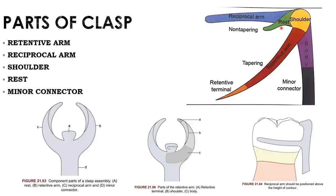Minor connectors connect different components to the major connector. So the components of the clasp assembly are: reciprocal arm, shoulder, retentive arm, retentive terminal, rest, body, and minor connector. Only the retentive terminal — the flexible component — is below the height of contour; all others are above.